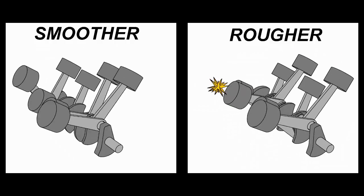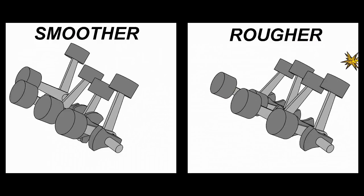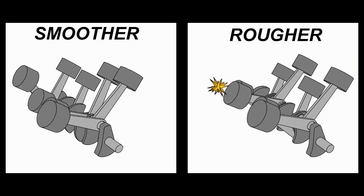But even just looking at these two drawings, it should be obvious that the cross plane engine on the left is going to run smoother than the flat plane engine on the right. Having cylinders fire at every 90 degrees instead of every 180 degrees just makes for a smoother overall engine cycle.